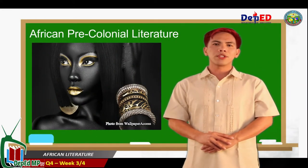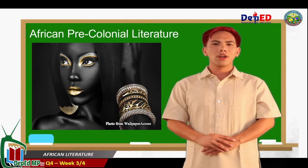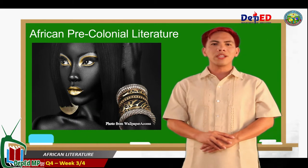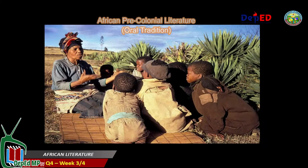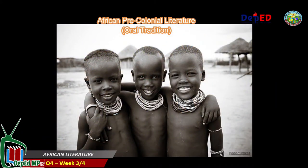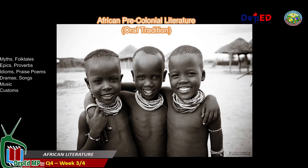The African pre-colonial literature is described as a reflection of the purest African life that is completely free from the influences of the white colonizers. Like any other place in the world, the literature of Africa began with their oral traditions — the prose and verse that were passed down from generation to generation through word of mouth. The oral tradition was the way of African tribes to educate their children about their culture, history, values, legends, and arts. These are undiluted African originals, which include myths and folktales, epics and proverbs, idioms and praise poems, dramas and songs, music and customs derived from African ways.